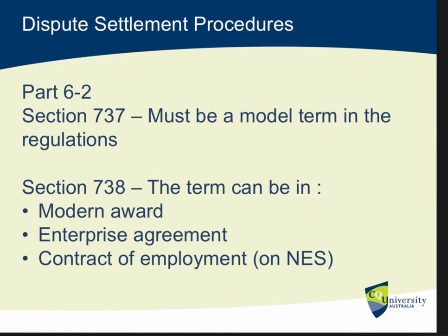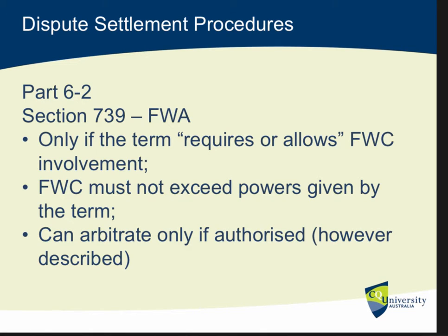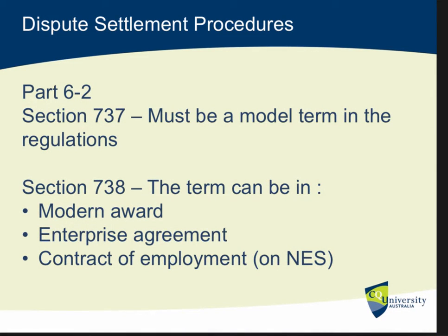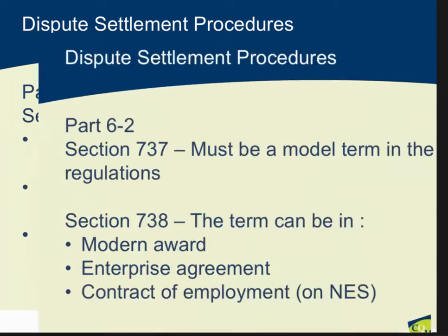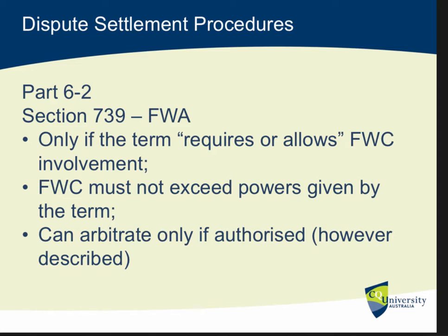So far as settling disputes, Part 6.2, particularly section 737, says there has to be a model term in the regulations and that can be used by the parties if they wish. Under section 738, the dispute settlement procedures that pull in the Fair Work Commission can be in an award, an enterprise agreement, or even a contract of employment, provided the disputes are about the national employment standards. In Part 6.2, section 739, the powers of the Fair Work Commission to step into a dispute are a little bit curtailed — it can only happen if the term in the award, the enterprise agreement, or the contract of employment requires or allows the Fair Work Commission to be involved.